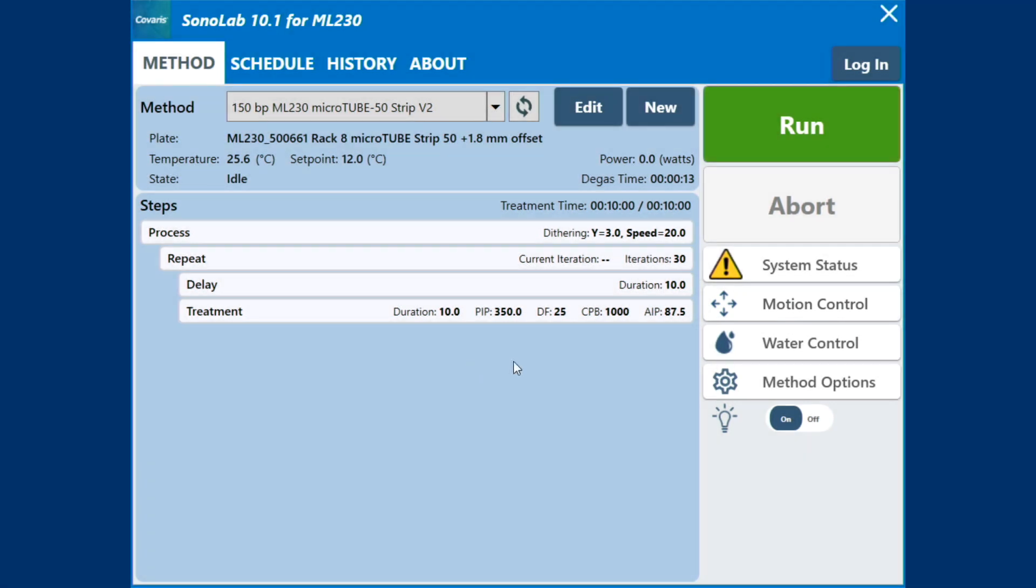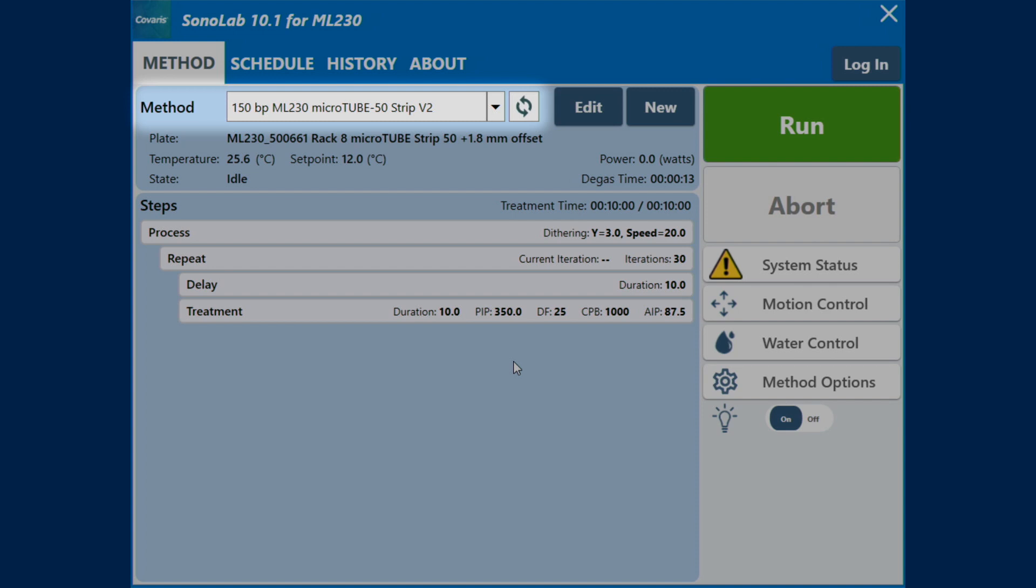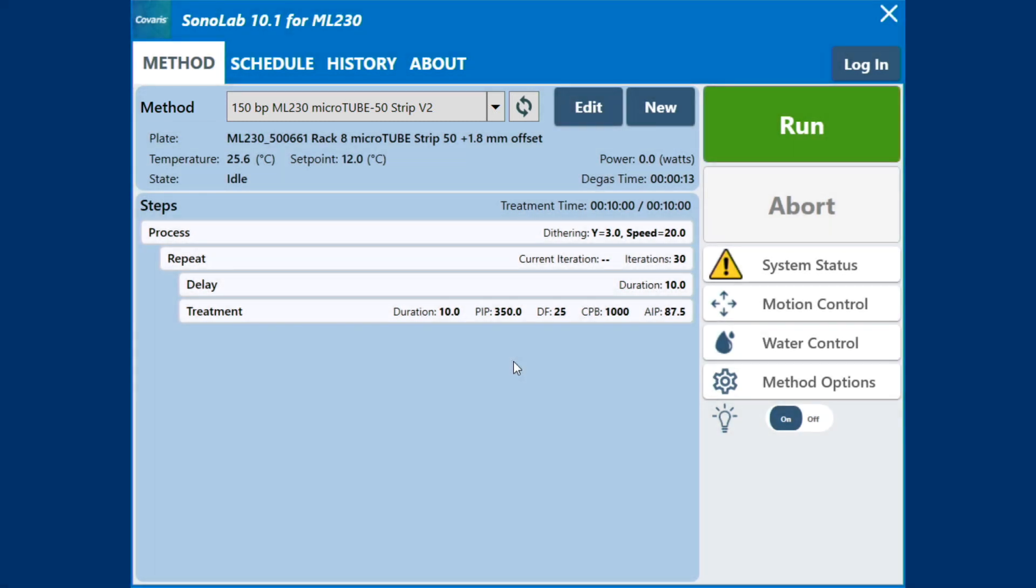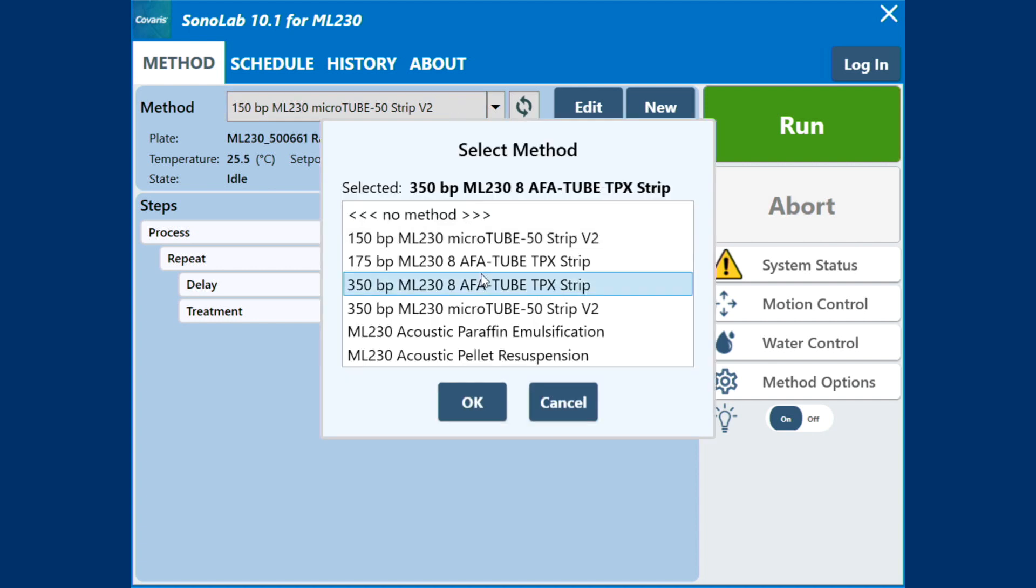To perform a run, there must be an acoustic method selected in the method box. To select and load an acoustic method, touch the method bar to display the method select pane. Scroll through the list to find the method you need. There are protocols pre-installed in the Sonolab software.